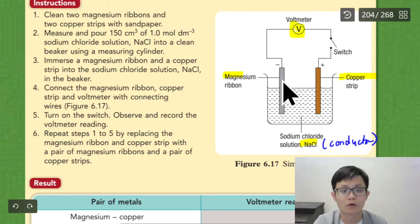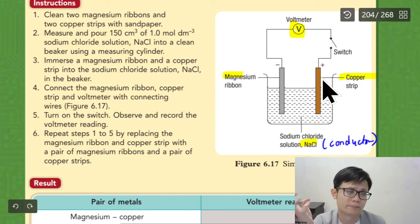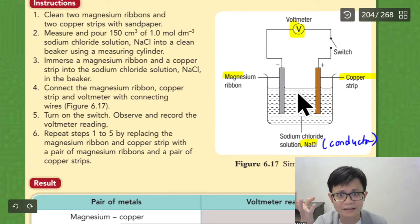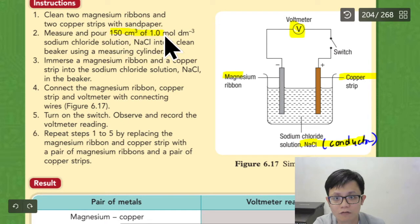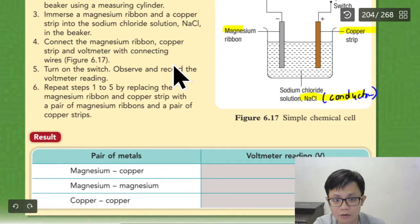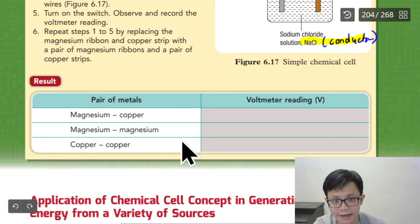You don't produce very high voltage. This one is you do in the school laboratory. So you produce electric. You touch also, you won't die. So you make sure you just take a better conductor. So what they do is they put 150 cm³, one mole of sodium chloride. And then you put voltmeter, and you measure the reading.